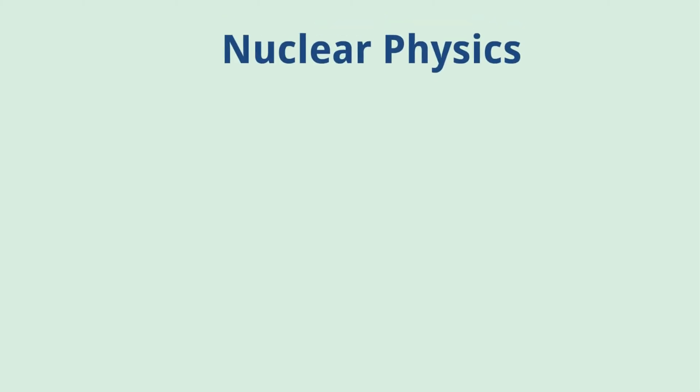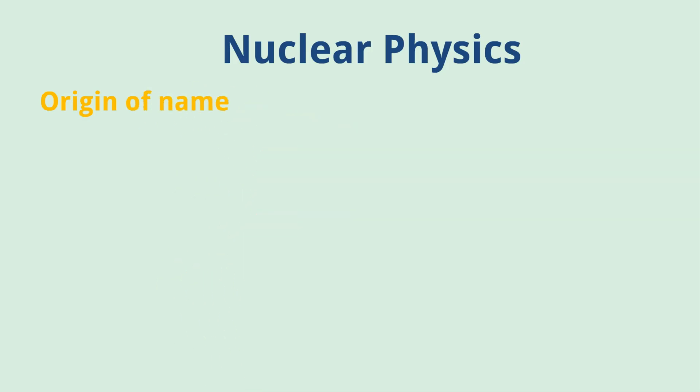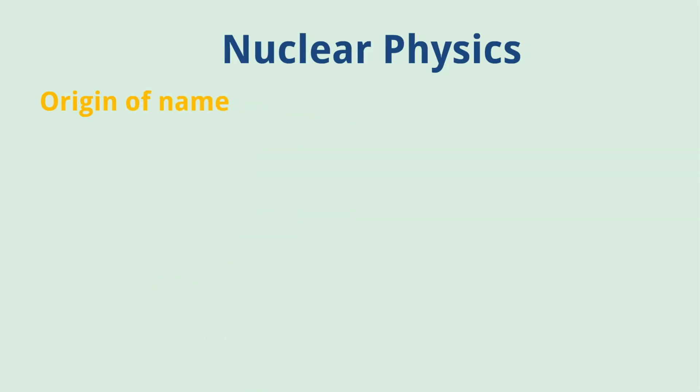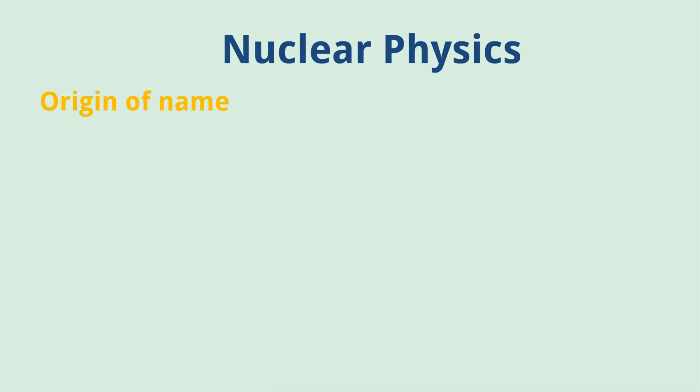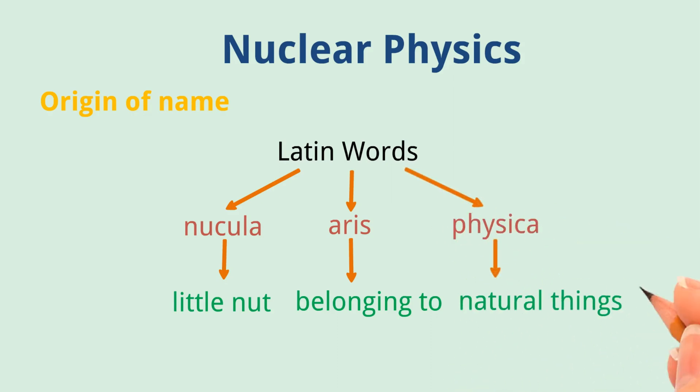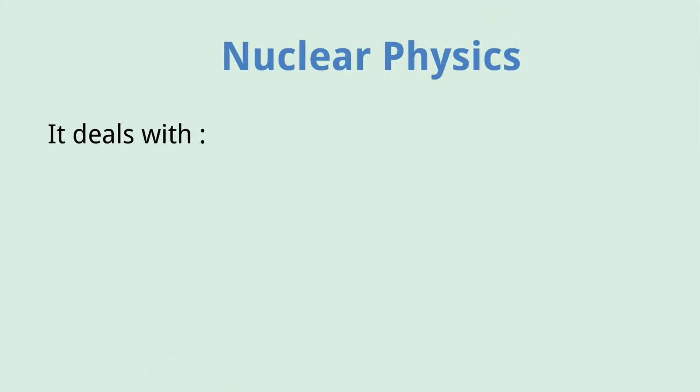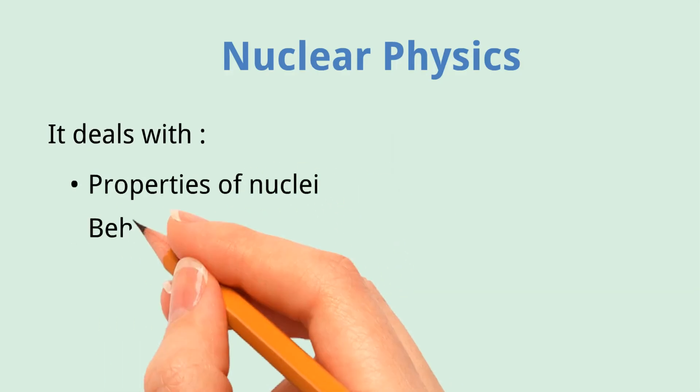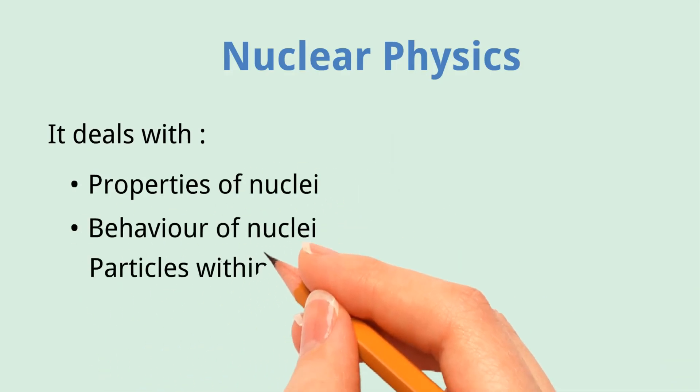Nuclear physics. Origin of name: The word nuclear physics is derived from Latin words 'nucula', meaning little nut, 'aris', meaning belonging to, and 'physica', meaning the natural things. It deals with the properties of nuclei, behavior of nuclei, and the particles within the nuclei.